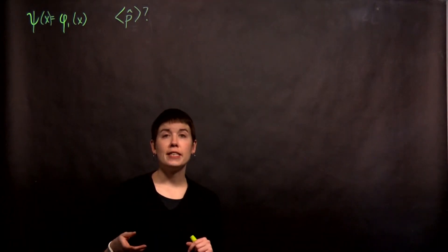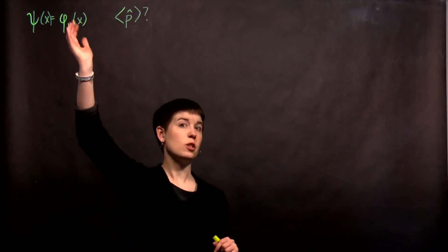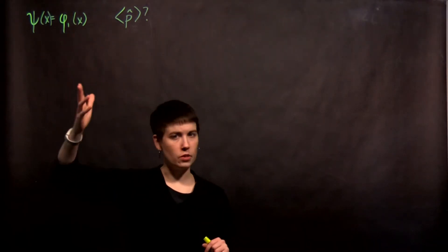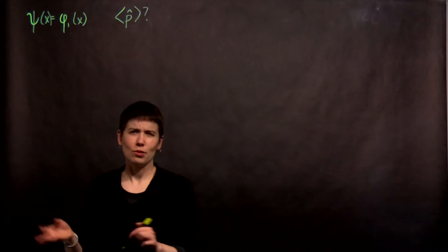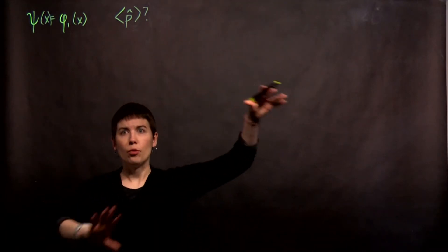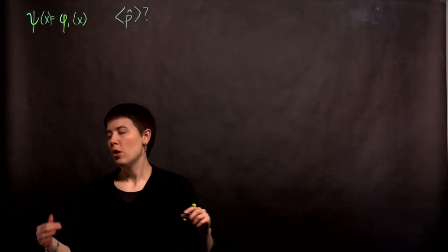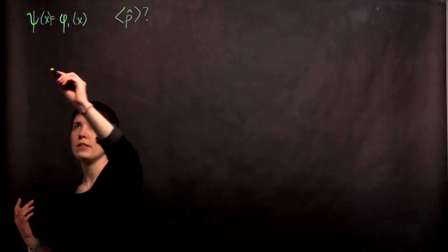Let's go through the calculation of finding the expectation value of the momentum operator for our first energy eigenstate in the infinite square well. In my notes I know what I'm doing, but I realize I haven't drawn out the whole potential and everything.